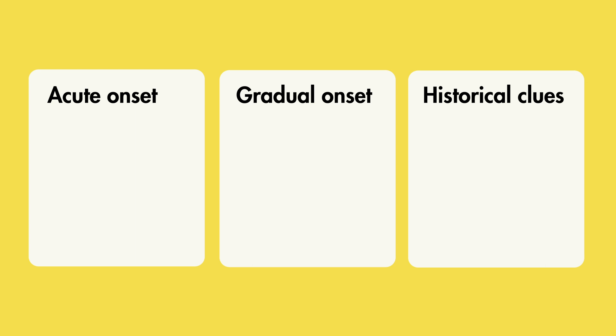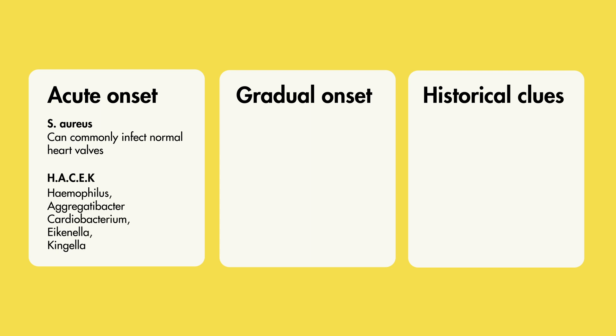In cases of rapid onset of symptoms, especially in patients with normal heart valves, Staph aureus is a common cause, along with HACEK organisms, which are also known to affect native heart valves. These are Haemophilus, Aggregatibacter, Cardiobacterium, Eikenella, and Kingella.